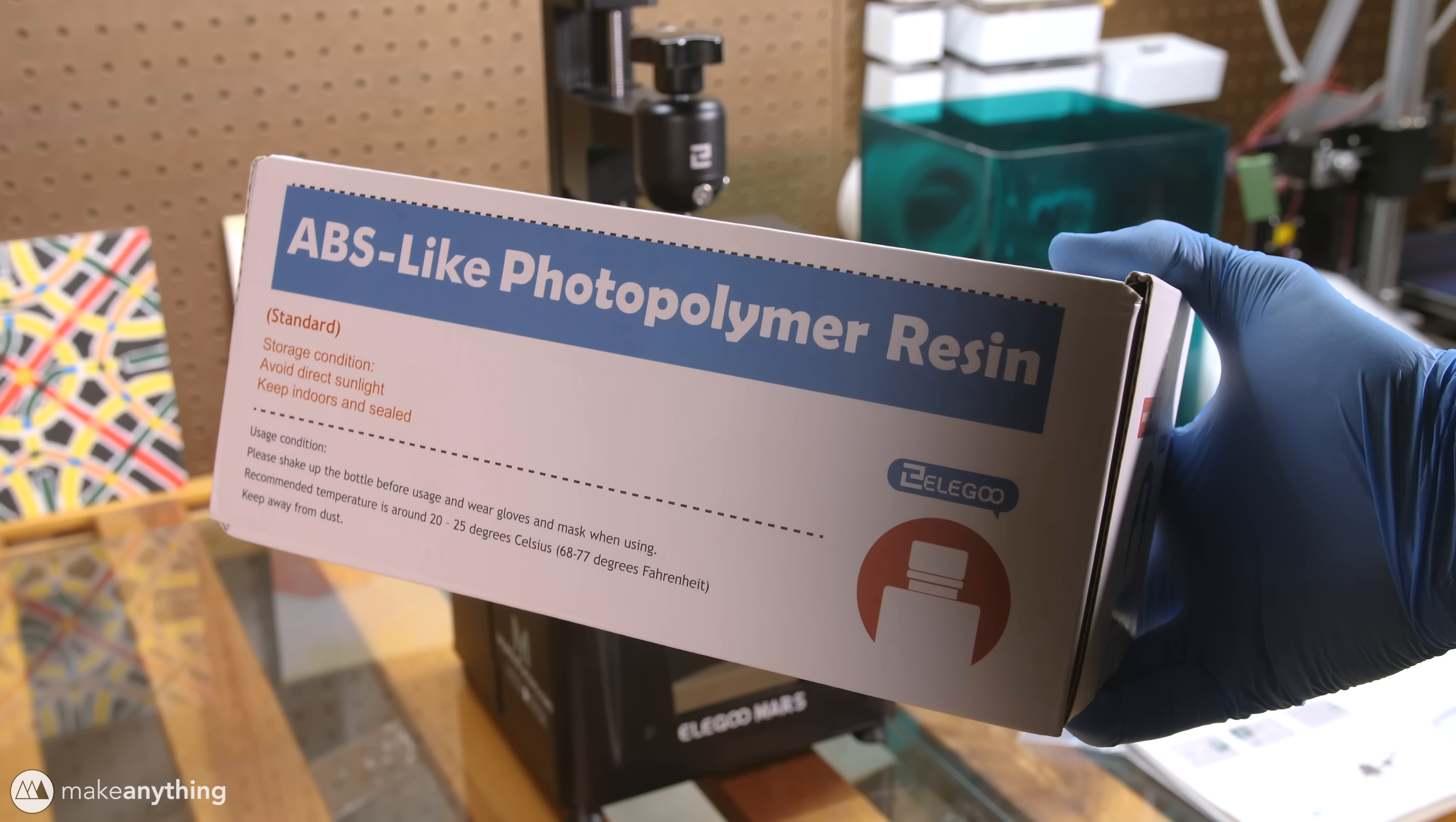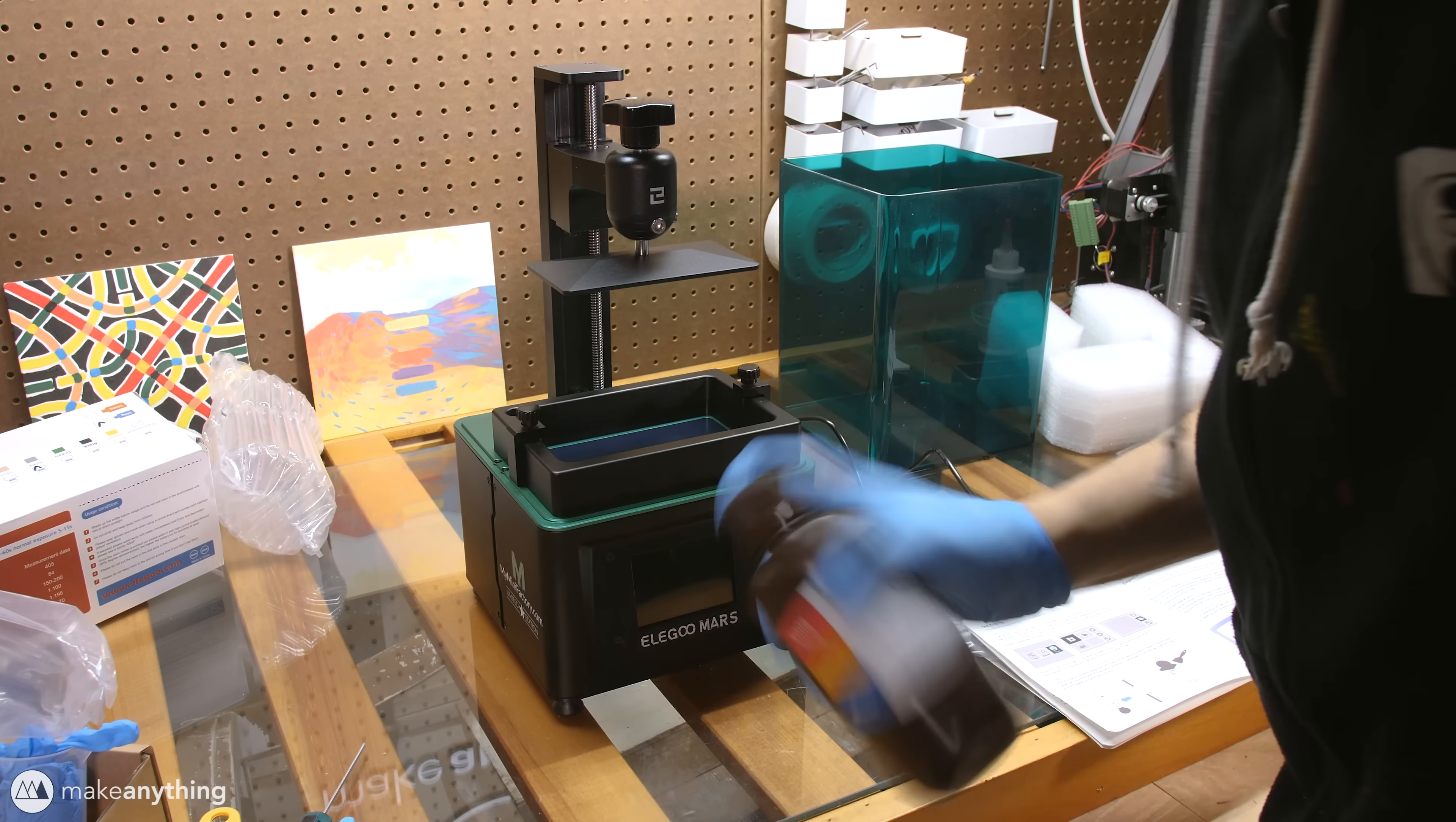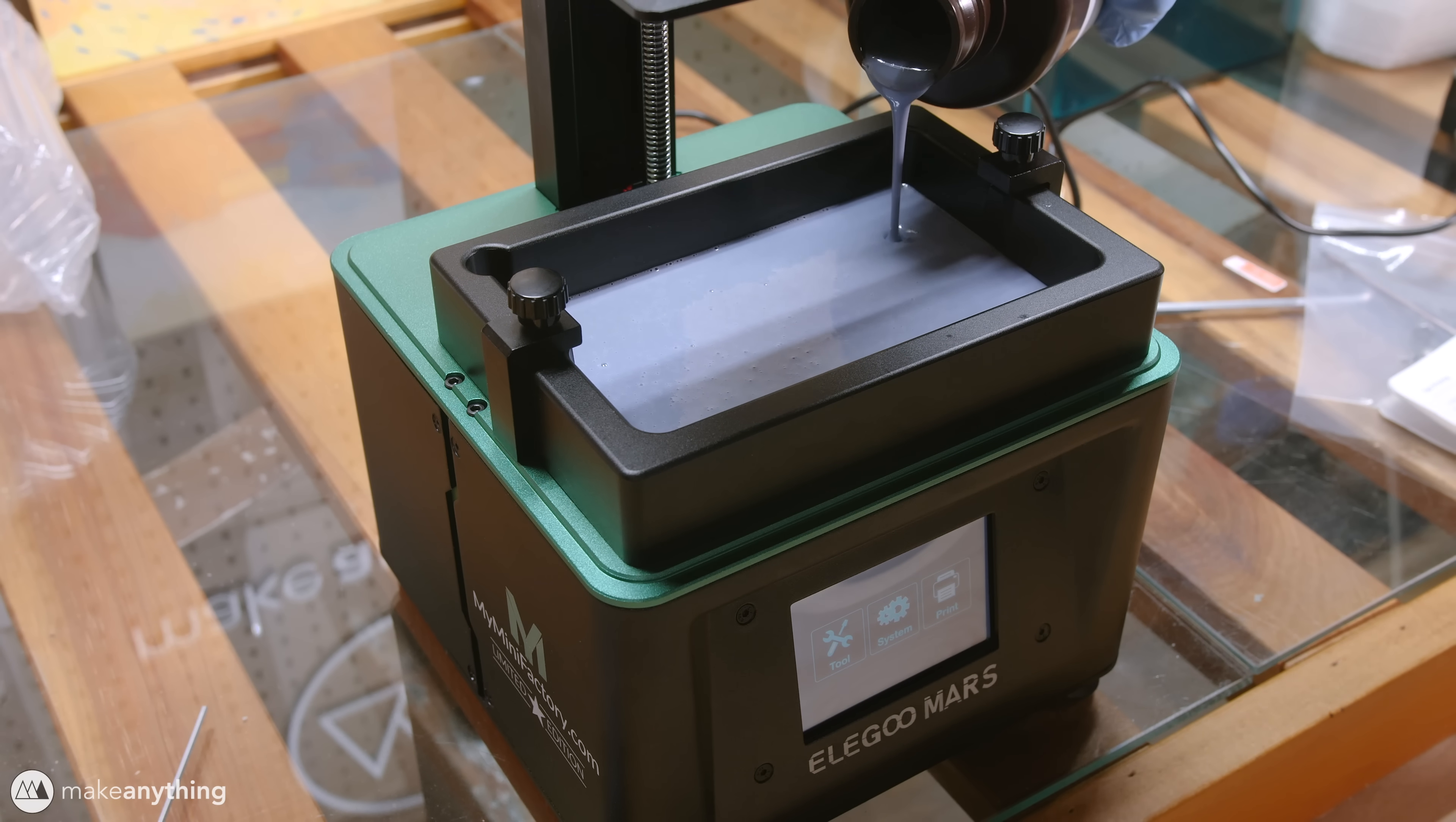I'll be using this ABS like resin by Elegoo. As a resin this isn't actually ABS but apparently it has similar properties so we'll go ahead and see if that's true. We'll go ahead and give that bottle a nice power shake and then we'll slowly fill up the vat from one corner which helps reduce the amount of bubbles inside of our resin.